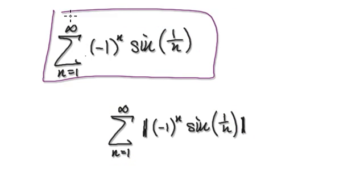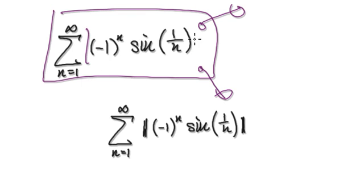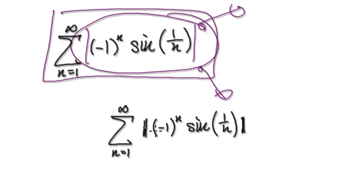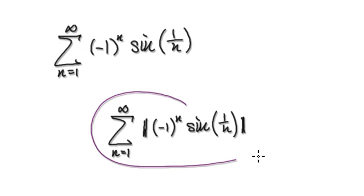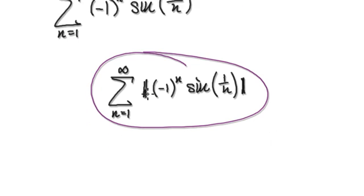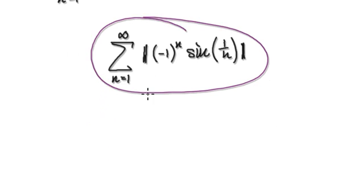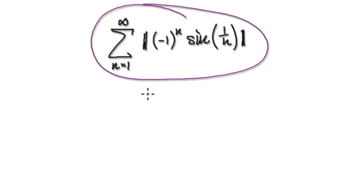We are trying to determine if this series will converge or if it will diverge. We should look at the absolute version of this series, so let's examine the absolute version.